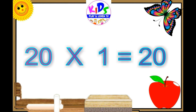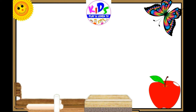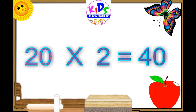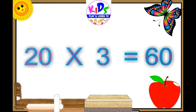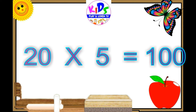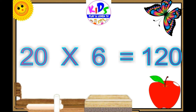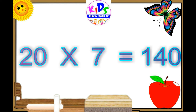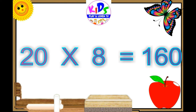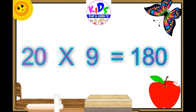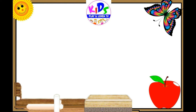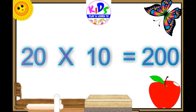Twenty ones are twenty. Twenty twos are forty. Twenty threes are sixty. Twenty fours are eighty. Twenty fives are one hundred. Twenty sixes are one hundred and twenty. Twenty sevens are one hundred and forty. Twenty eights are one hundred and sixty. Twenty nines are one hundred and eighty. Twenty tens are two hundred.